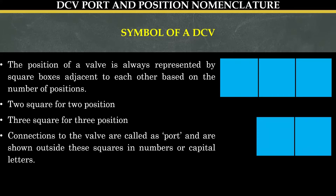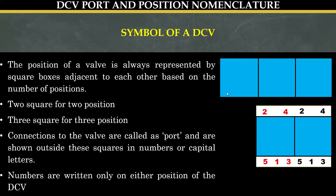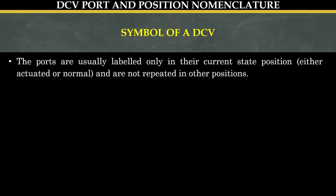Connections to the valve are called ports and are shown outside these squares in numbers or capital letters. Here 2, 4, 5, 1, 3 represent the ports of a direction control valve. These numbers are written only in one position of the direction control valve and are not repeated on both positions. The ports are usually labeled only in their current state position, which can be either actuated state or normal state.